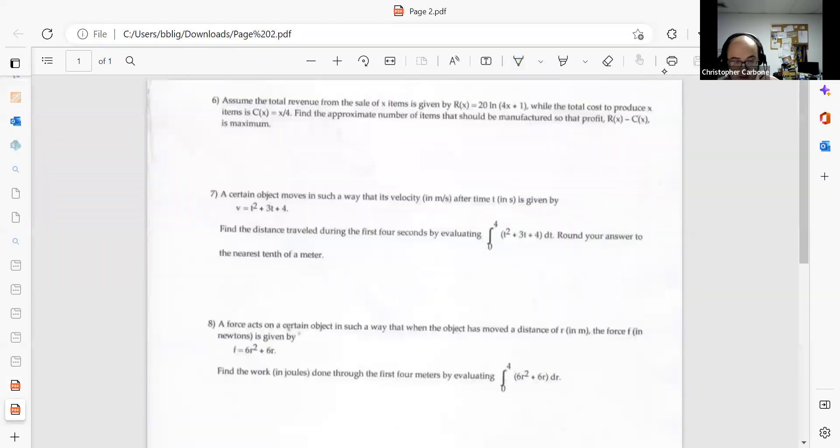To continue with number 6, we have assumed the total revenue from the sale of x items is given by R of x is equal to 20 times the natural logarithm of 4x plus 1, while the total cost to produce x items is C of x is equal to x divided by 4. We want the approximate number of items that should be manufactured.